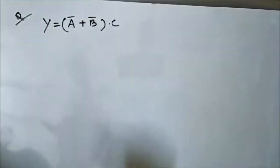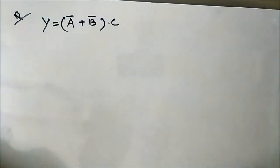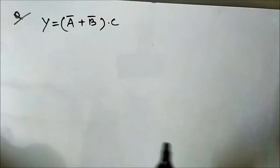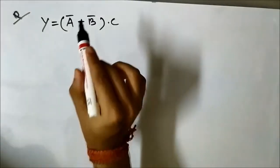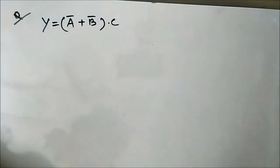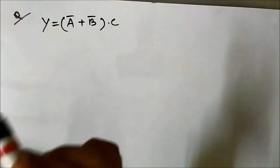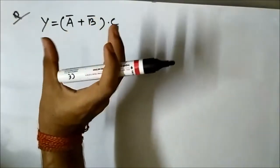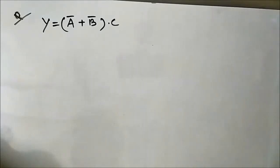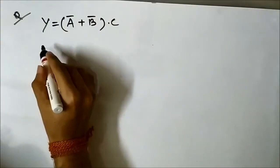Hello friends. Here we have another boolean expression which we have to implement using NAND gates. This boolean expression, if we have to implement it using NAND gates, there is only one problem — this OR symbol, this plus sign — which we have to remove and convert into a product expression. All the variables present in this boolean expression should be in AND form only, then we can implement the expression using NAND gates. For that, we will use the same trick.